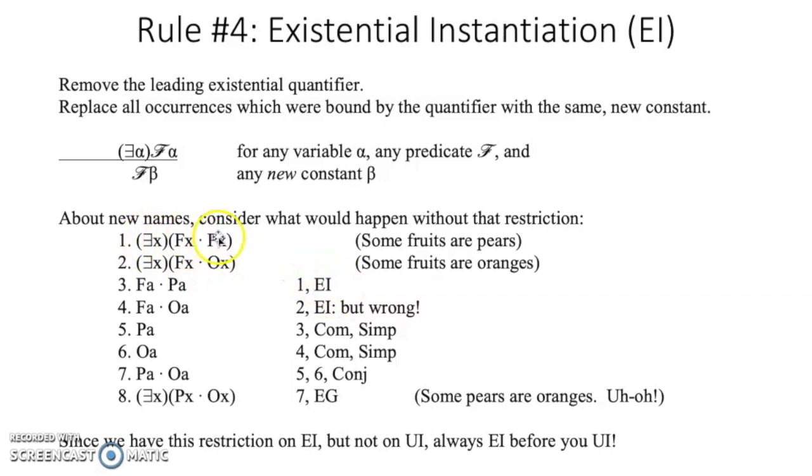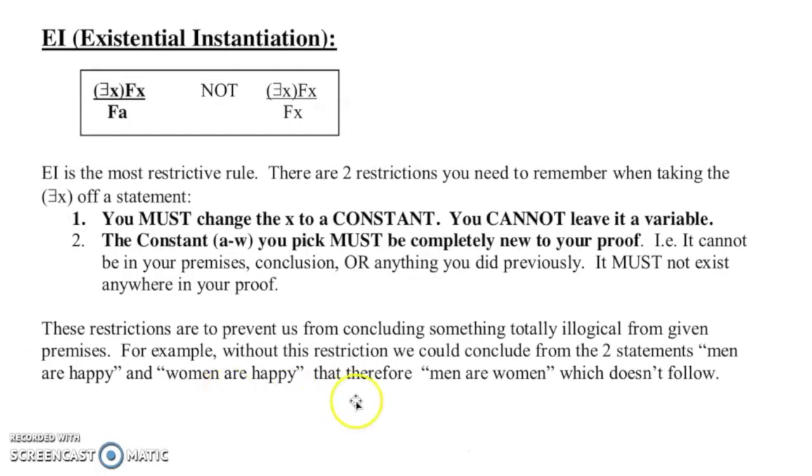Okay, so here's an example. So here you can do the EI from this line one and choose the a. However, when you go and you do it again for line two, you need to choose a completely different constant. Okay, so since we have this restriction on EI but not on the UI, always EI before you UI. Okay, you have to do the EI, choose what your constant is going to be, and then when you do your UI, just choose the same constant, and then you can play with it.